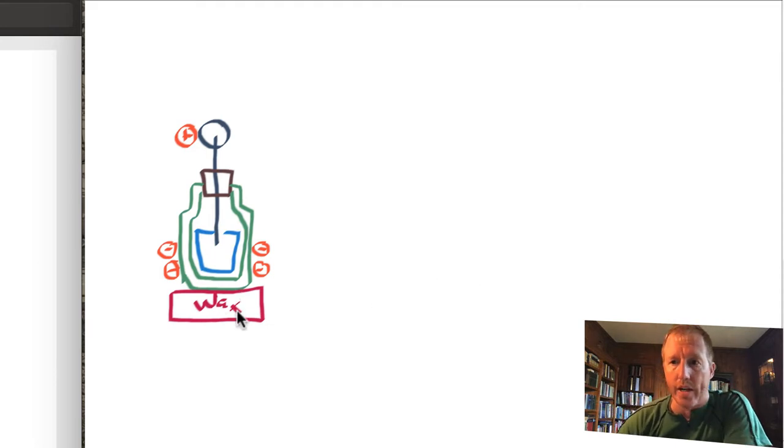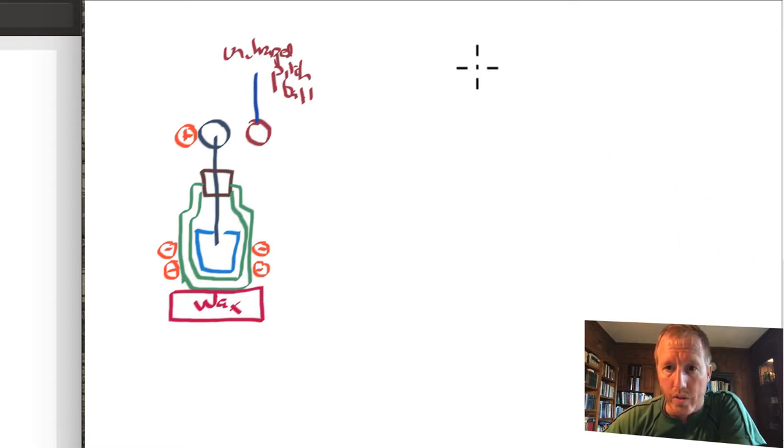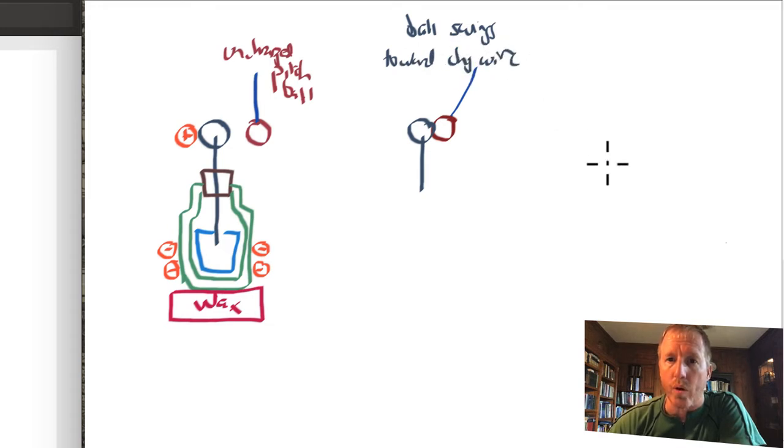Now, what is the experiment that he carried out? He hung a small pith ball made of cork from a silk wire. And the important point was this pith ball was uncharged. So this is an uncharged or unelectrified pith ball, very light, like a piece of styrofoam. And he noticed that when you do this, the first thing that happens is the pith ball swings toward this metal ball, and it swings toward it, and it makes contact with it. So the pith ball swings toward the charged wire. Now, you might ask, why in the world does this happen?